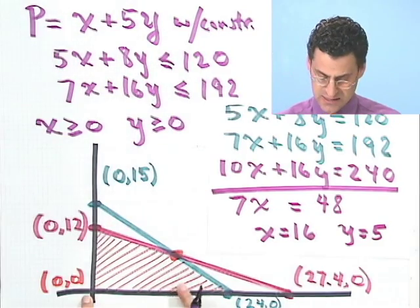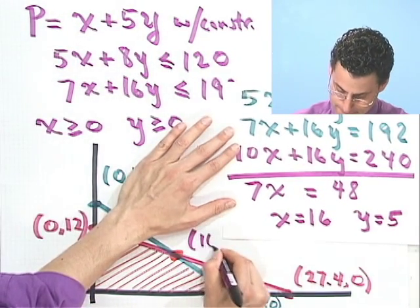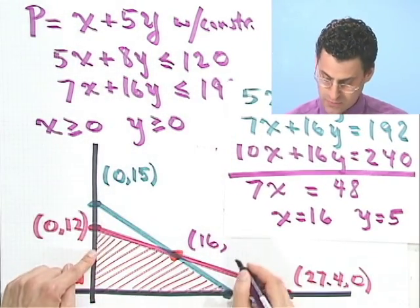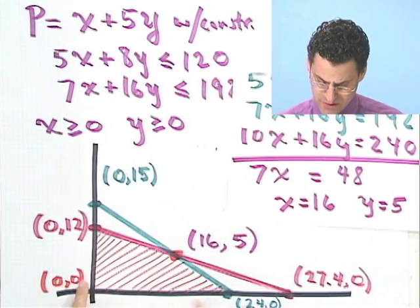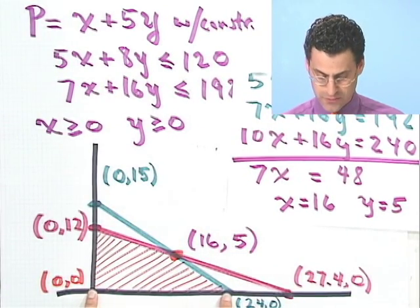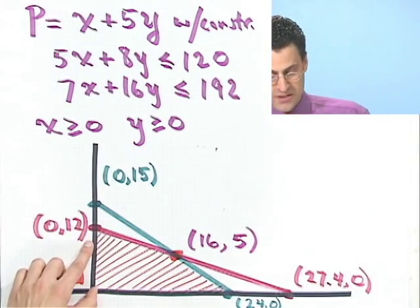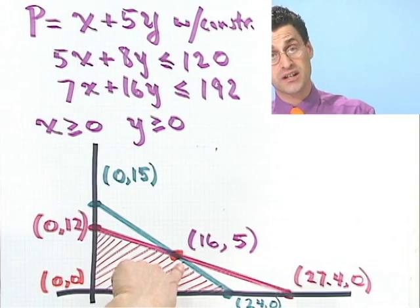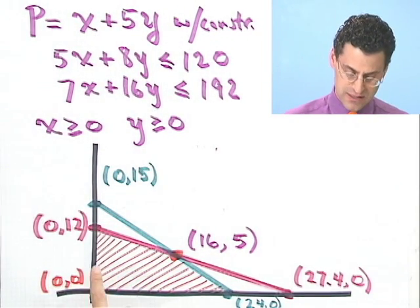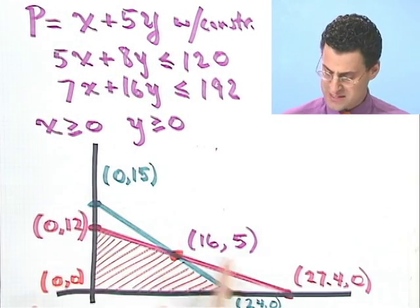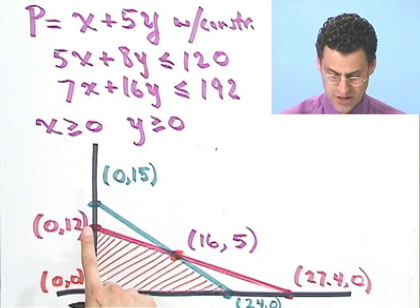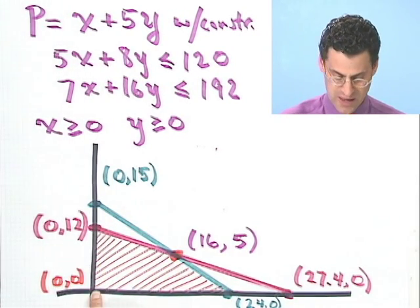So it looks like x is 16 right here, and y is 5. Does that make sense? It sort of makes sense. This looks like 16 if this is 24. If this is 12, that could certainly be 5, so at least my picture is reasonable. So I actually had to solve those things simultaneously to find that particular point. Now I've got how many points? Just look at the colored region. I've got this point, that point, that point, and that point.